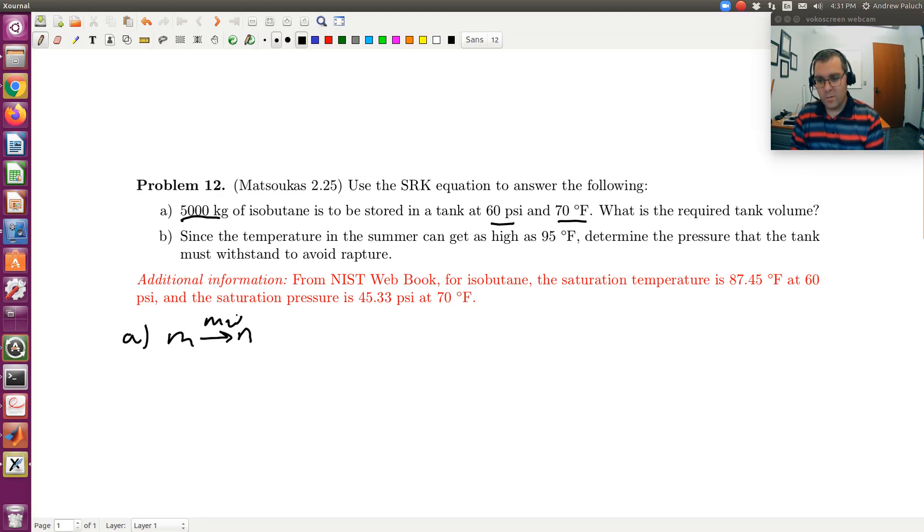So I know N times molecular weight is equal to mass. So N is equal to mass divided by molecular weight. I can readily get N. And so then, required tank volume V total is going to be equal to N times V.